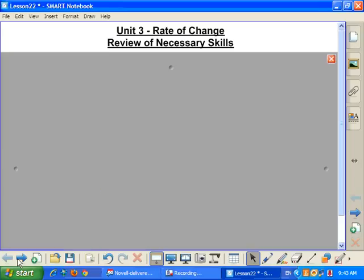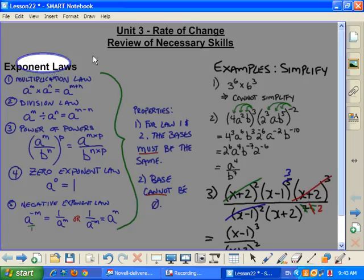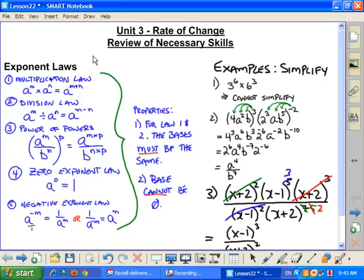Welcome to Unit 3, and the topic or title of Unit 3 is called Rate of Change. Today I'm looking at Review of Necessary Skills. You have the blank note, so you can pick and choose what needs to be copied out. The first thing that you need to know goes back to your Grade 9 course: you need to know your Exponent Laws, and your five Exponent Laws are listed here.